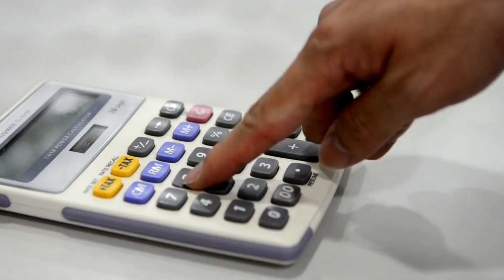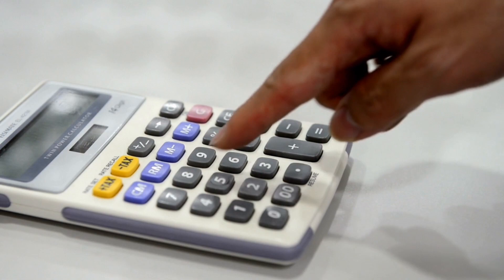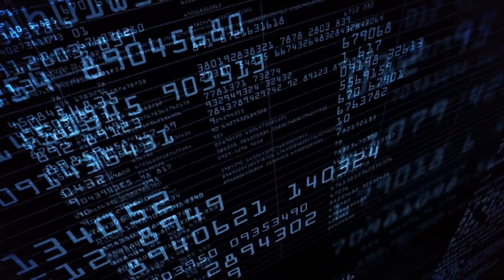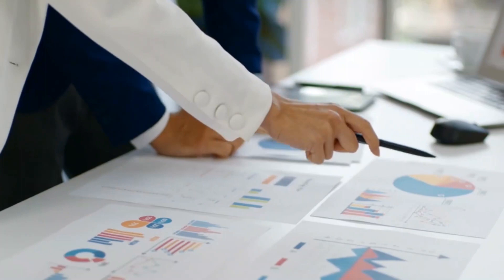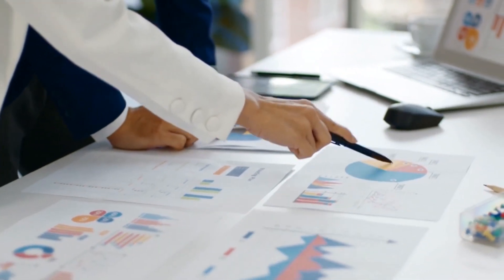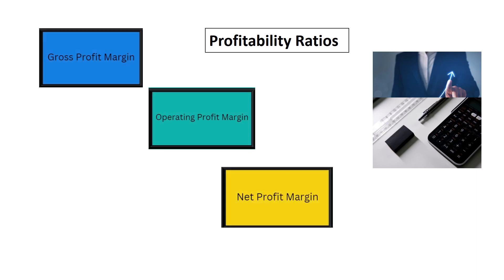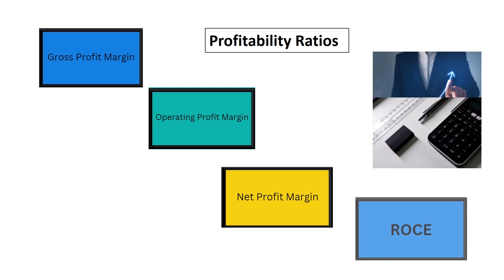In this video we're practising calculating the four key profitability ratios. Feel free to grab a pen and paper and work through them with me. In addition to measuring profits, businesses want to measure the profitability of the business as well — the amount of profit made relative to revenue or investment. Get ready to answer questions on gross profit margin, operating profit margin, net profit margin, and ROCE, which is return on capital employed.